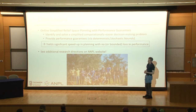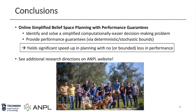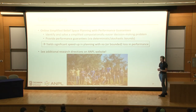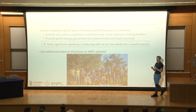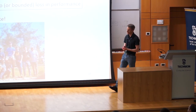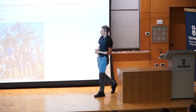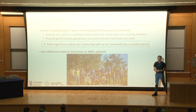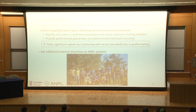To summarize: we considered online simplified belief space planning with performance guarantees. The concept is to identify and solve a simpler formulation of the belief planning problem and importantly provide guarantees — which can be deterministic or stochastic — allowing us to reduce computational burden, achieving speedup with limited or no loss in performance. We're very much excited about this concept and have further directions on the lab website. Thank you.